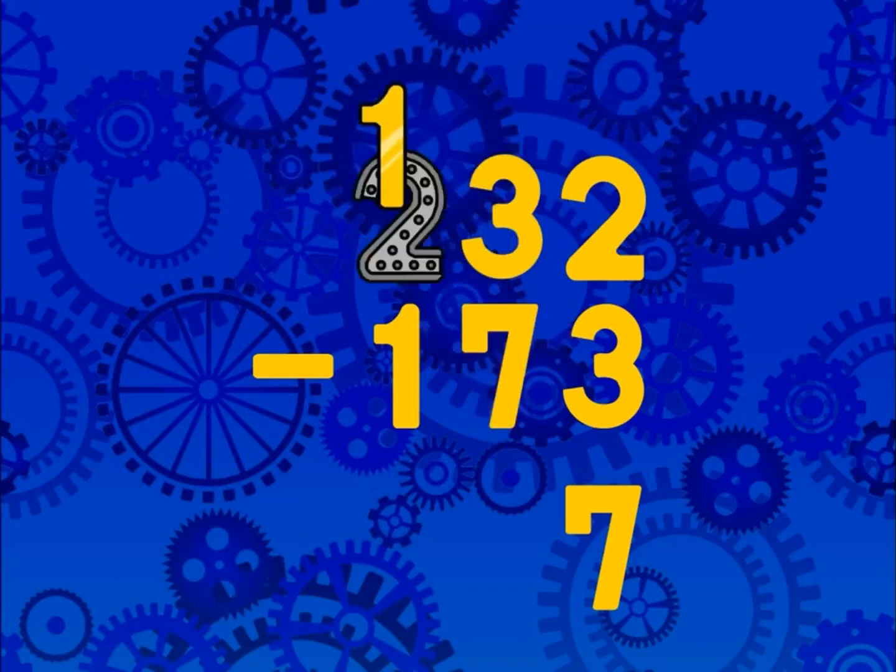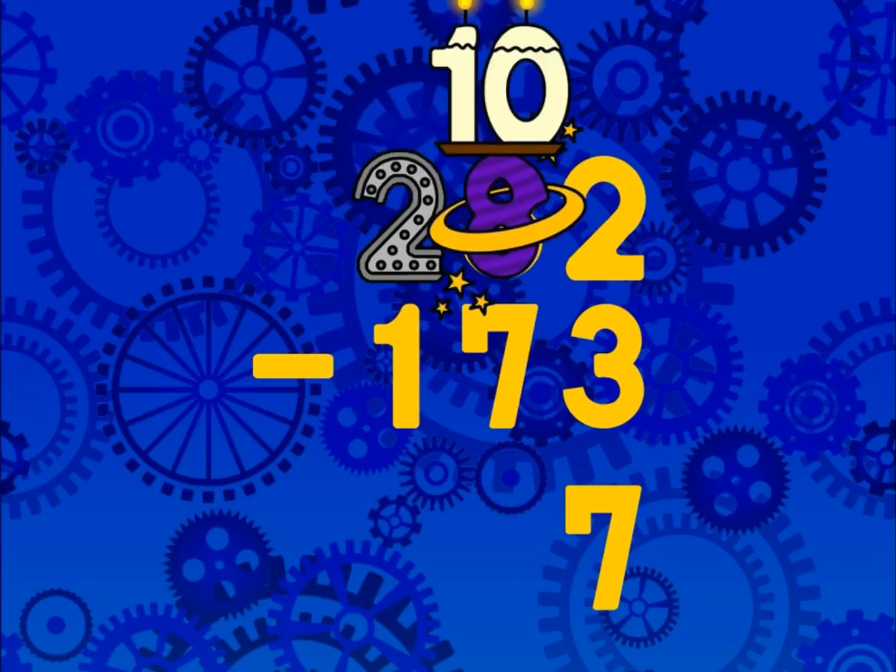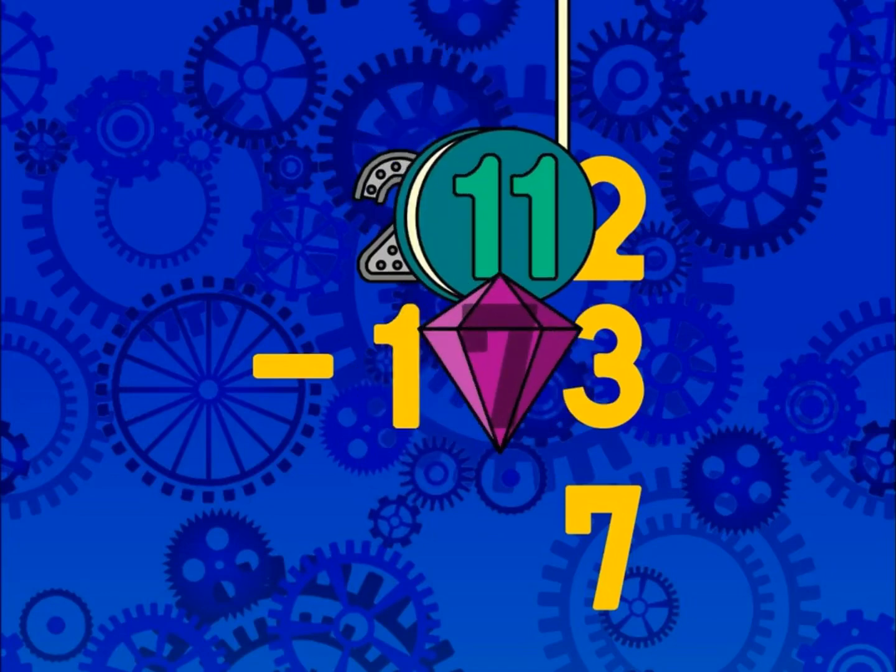Well, you ask a silly question, you get a silly answer. From the 3, you then use 1 to make 8 1's, you add those 1's to the 3, and you get 1, 3, base 8, or, in other words, in base 10, you have 11, and you take away 7, and 7 from 11 is 4.